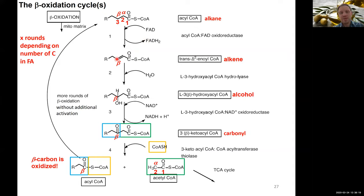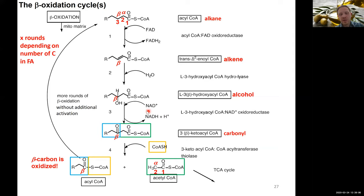In step two, the double bond — which is more reactive, as we saw in the TCA cycle around malate — is used to bring in water via a hydratase, generating a hydroxyl group at the beta carbon, converting the alkene to an alcohol function. In step three, we oxidize this alcohol function, reducing NAD+ to NADH, generating a keto function at the beta carbon.